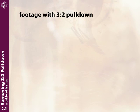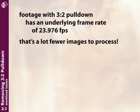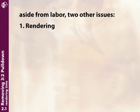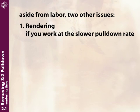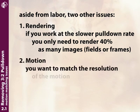Here's why: interlaced NTSC video has a field rate of 59.94 fields per second. That's a lot of individual images every second that you have to render, track, rotoscope, mask, etc. However, footage with 3:2 pulldown really only has a unique frame every 23.976 frames per second—a lot fewer frames to process. Besides labor, there's also rendering time: removing pulldown means your renders can take only 40% as long.